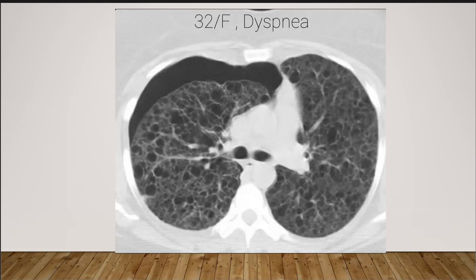Other differential diagnoses include lymphoid interstitial pneumonia and amyloid, which can be associated with Sjögren's syndrome. Another differential is Birt-Hogg-Dubé syndrome, which is associated with renal cell carcinoma or renal oncocytoma. Pneumocystis pneumonia is also a differential diagnosis.